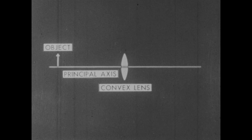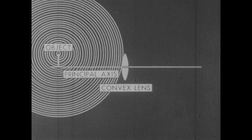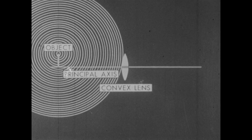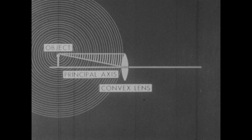We remember that from any point on an object, waves of light proceed in all directions. In understanding how images are formed, let's select two of the many rays which the lens intercepts. These two lines indicate the portion of the wave front we're interested in.